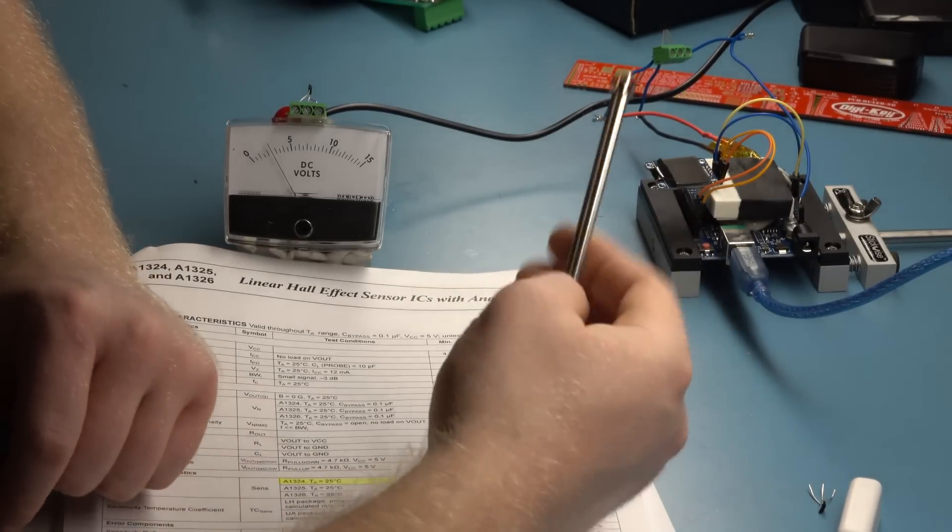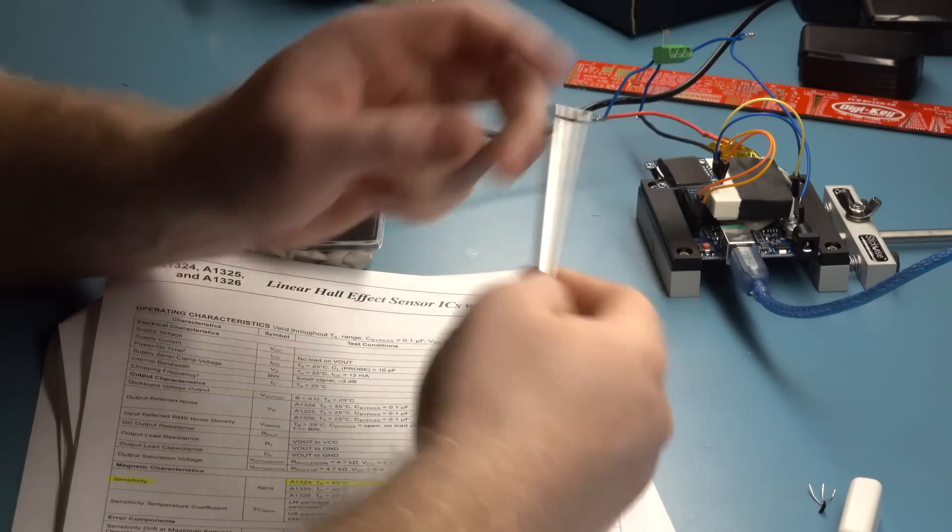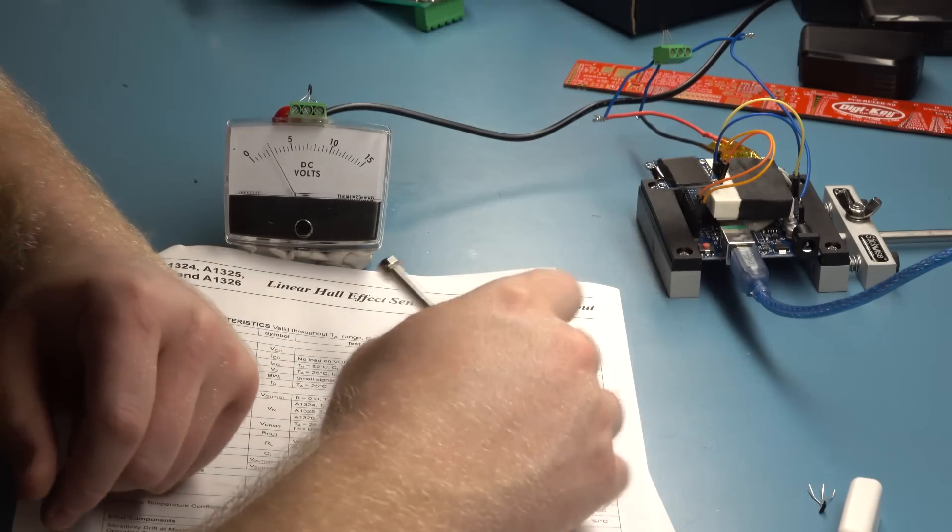Hey guys, so I'm going to show you how you can measure the field strength of a magnet and the polarity of the magnet with a Hall effect sensor.